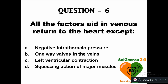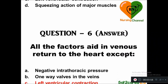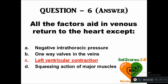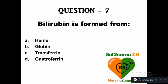Question 6: All the following factors must return blood to the heart except — option A: negative intrathoracic pressure, B: one-way valves in the veins, C: left ventricular contraction, D: squeezing action of the major muscles. The right answer is option C, left ventricular contraction — contraction does not help in venous return to the heart.